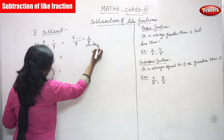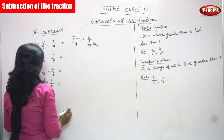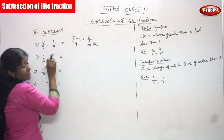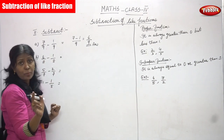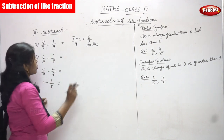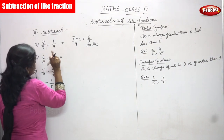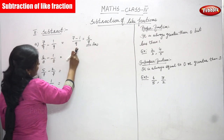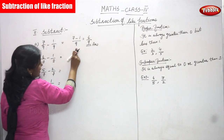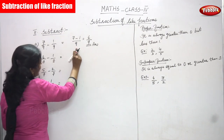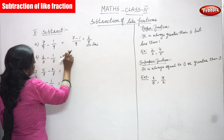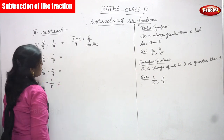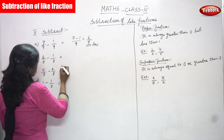For like fractions, you check the denominators. If the denominators are the same, you write the denominator only one time and then subtract the numerators. So 7 minus 1 gives you 6/9.